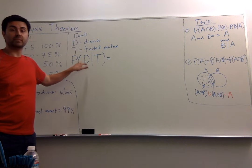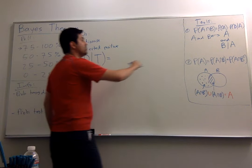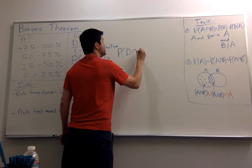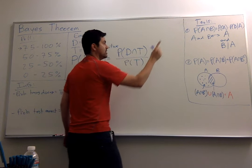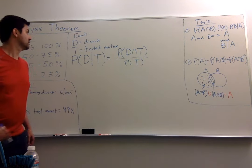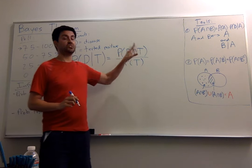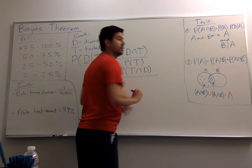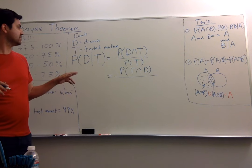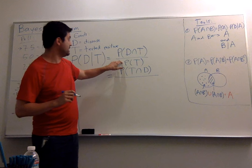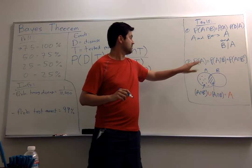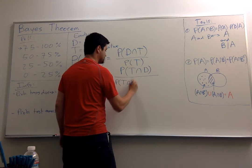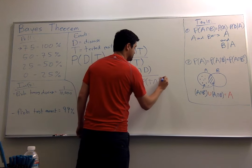So, these are our tools. Now we're going to go ahead and calculate the probability of disease given tested positive, P(D|T). We're going to use Formula 1 to get that P(D|T) is the same as P(D intersection T) divided by P(T). And now we're going to look at the top and the bottom separately. Notice that D intersection T is the same as T intersection D. For the bottom, we're going to use Formula 2: P(T) is the same as P(T intersection D) plus P(T intersection D complement).